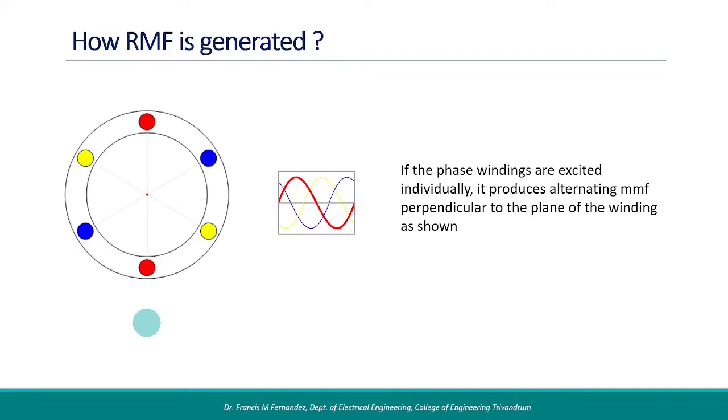The same thing happens when the other phases are energized individually. Here we see the Y phase flux, and then the B phase flux.